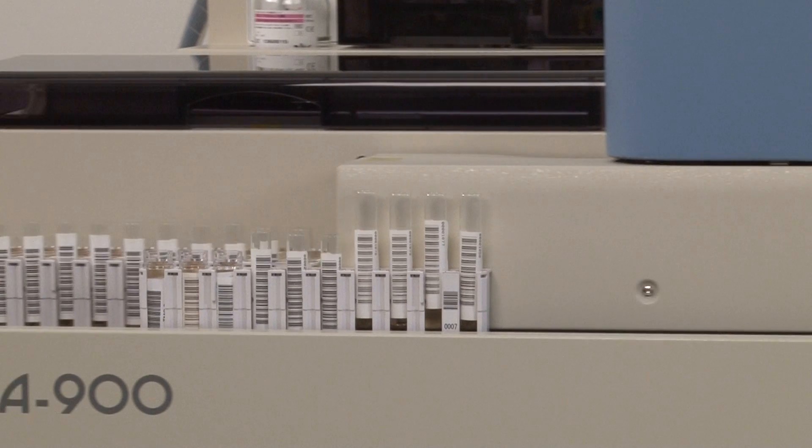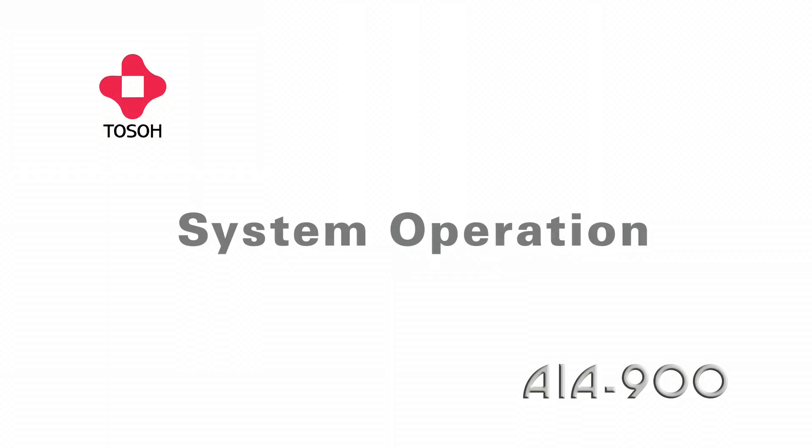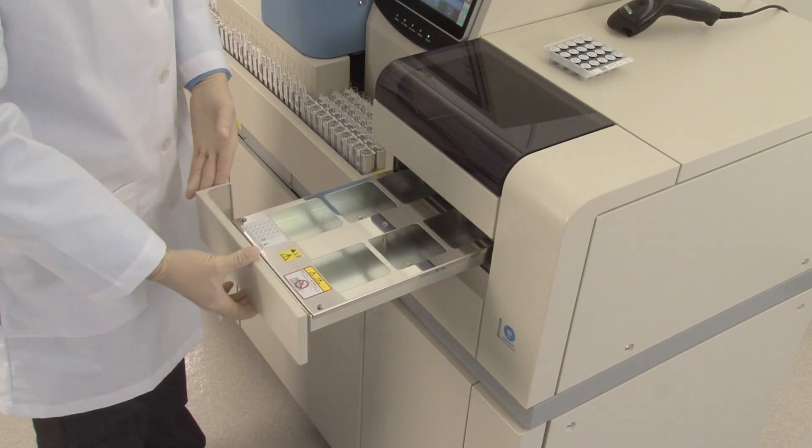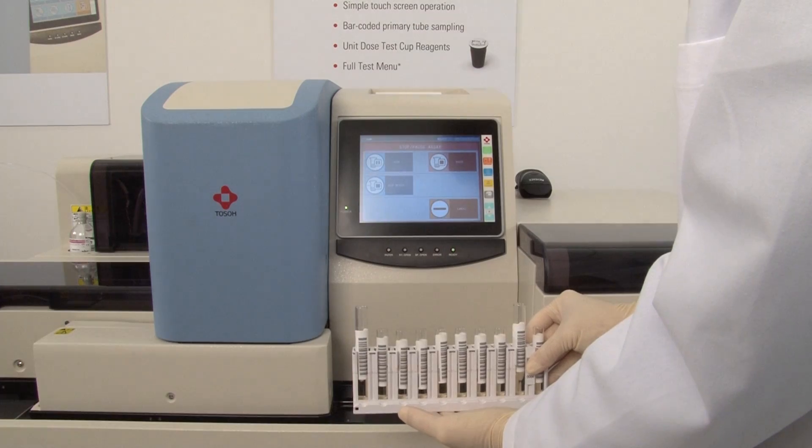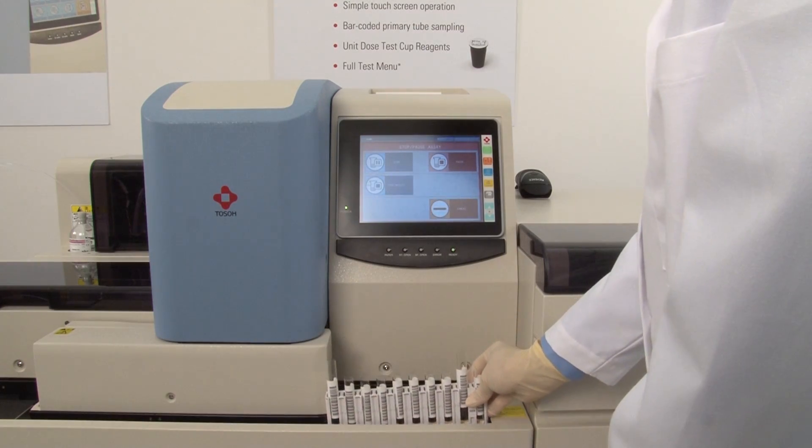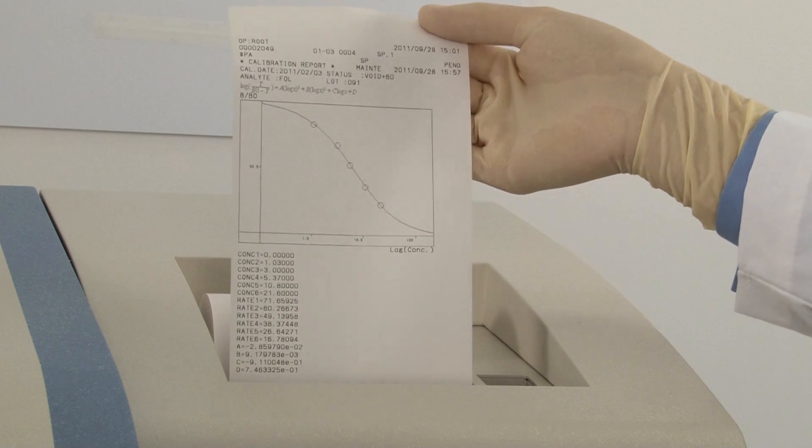Let's take a closer look. System operation. The AIA 900 operation is very simple and intuitive. The system is easy to set up and operate and requires no special electrical or plumbing needs.